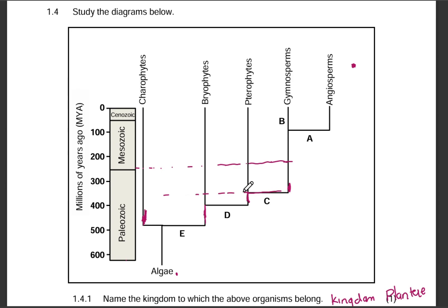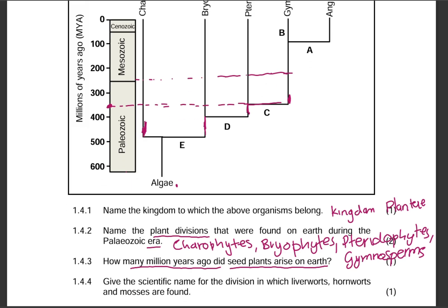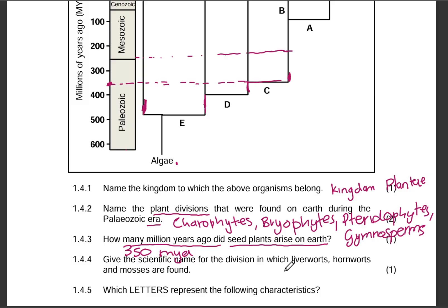We're going to drag it to the left so we can see exactly — this won't be perfectly accurate because I'm not using the ruler, but our line should be almost in the middle between 400 and 300. So that would be 350 — 350 million years ago. That's the answer: 350 million years ago.